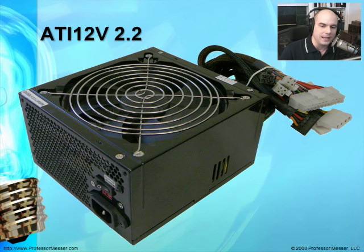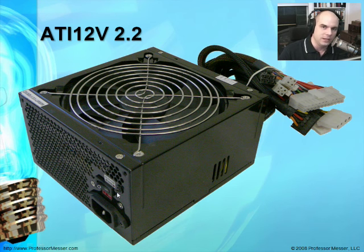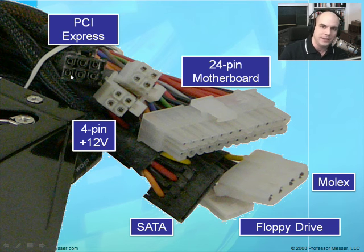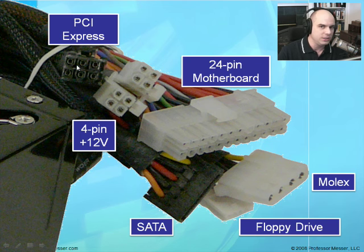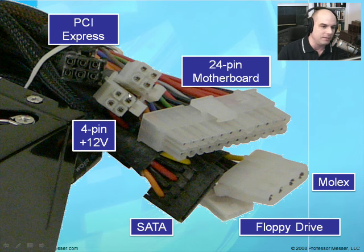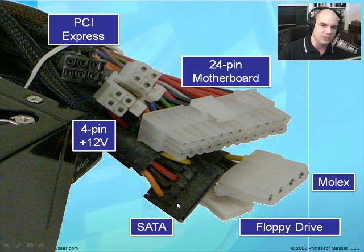Here's what one of these power supplies looks like. You can see the power connection coming in from the wall, and there's a red switch on the side that allows you to switch between 115-volt and the 220-volt used in Europe. Then you've got all these connectors on the backside. Zooming in, we have the 24-pin motherboard connection, a 6-pin PCI Express connection — power supplies might have one, two, or even three PCI Express power connections to support those high-power cards. There are also extra 4-pin 12-volt connections, plus the standard Molex, floppy drive, and SATA connections.